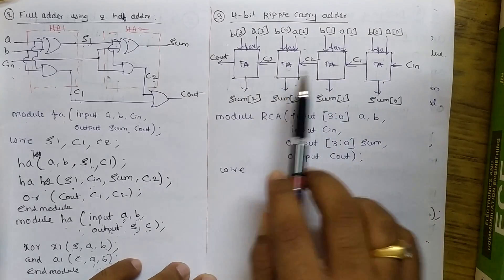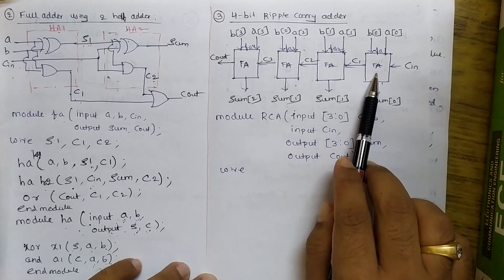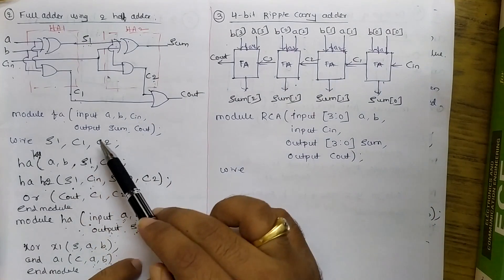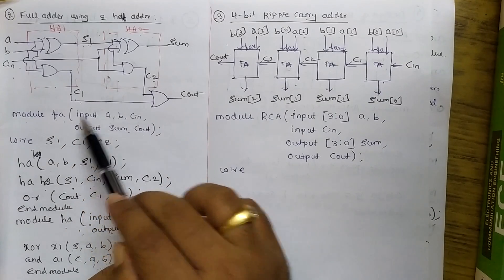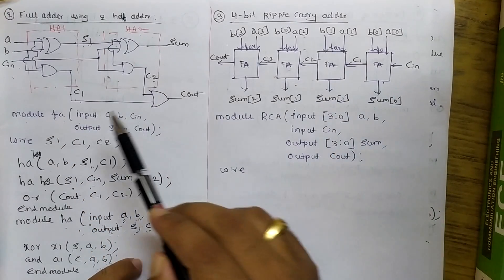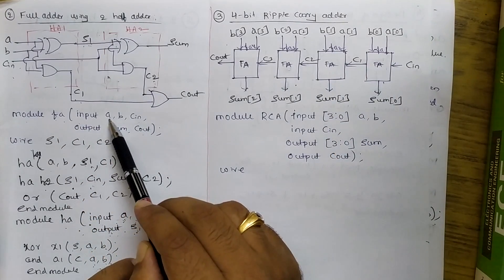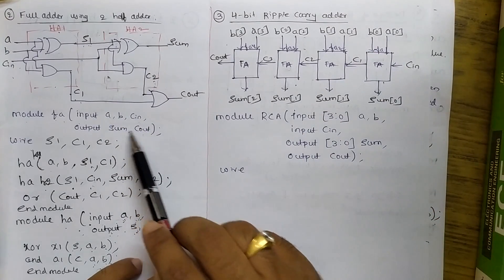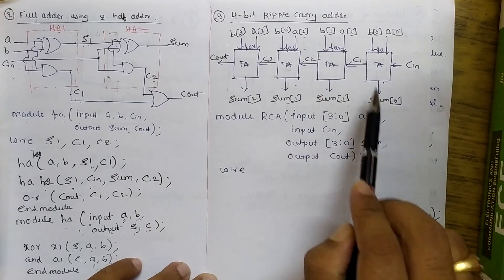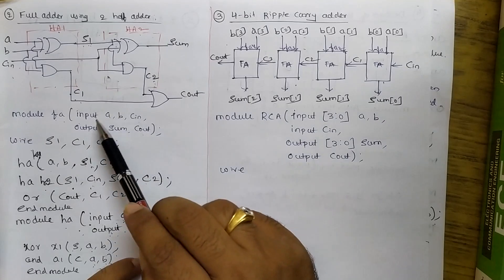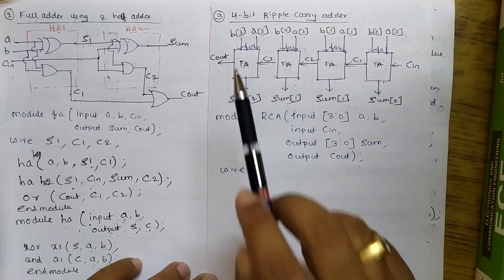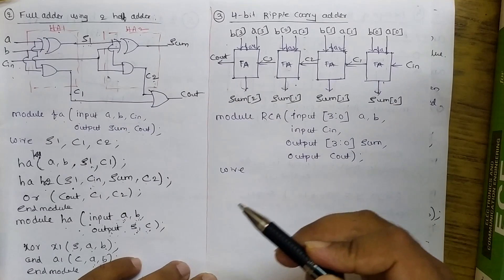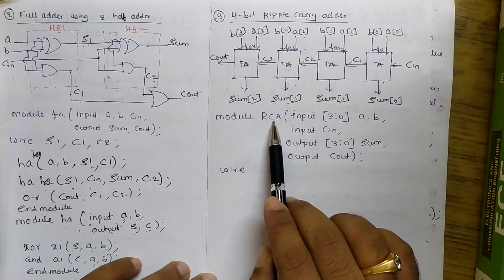The full adder design is already done. For one full adder we need A, B, and C_in as inputs, and sum and C_out as outputs. I am calling this same full adder four times, which gives me the 4-bit ripple carry adder.